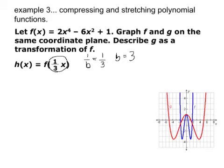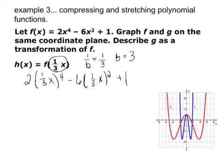Let's go ahead and work it out. So 2 times 1 third x to the 4th minus 6 times 1 third x squared plus 1. Here's where your calculator skills get useful. 1 third raised to the 4th power is 1 third times 1 third times 1 third times 1 third. That would be 1 over 81 x to the 4th times 2, which is 2 over 81 x to the 4th.